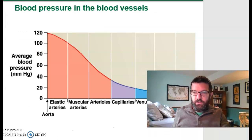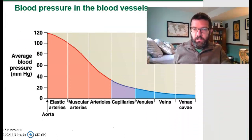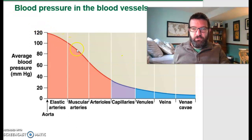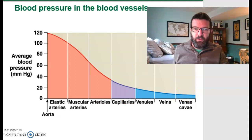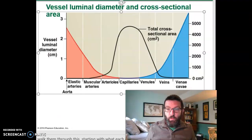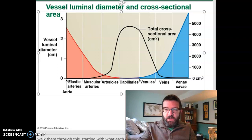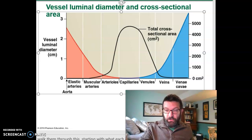Here is a look at blood pressure as it moves through your arteries, capillaries, and veins — it's much, much smaller by the end. So how do we maintain blood flow? Well, while pressure goes down, resistance is also going to go down.